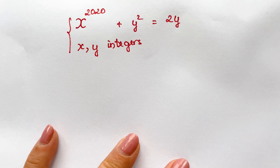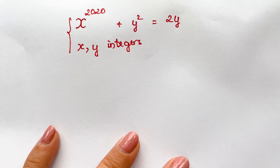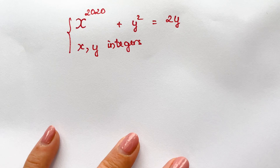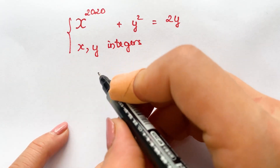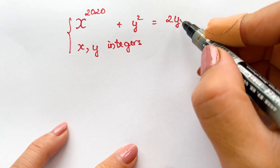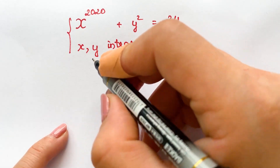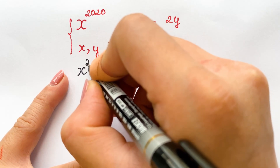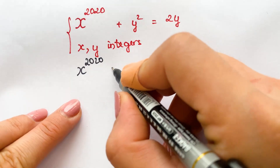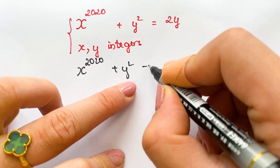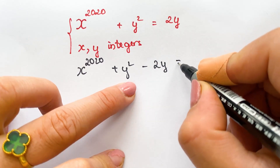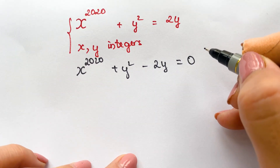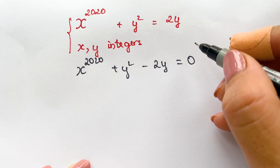Hello everyone. How to find the value of x and y for the equation? In this case, firstly you need to move terms to the left hand side, therefore you can write x^2020 plus y squared minus 2y equals zero.